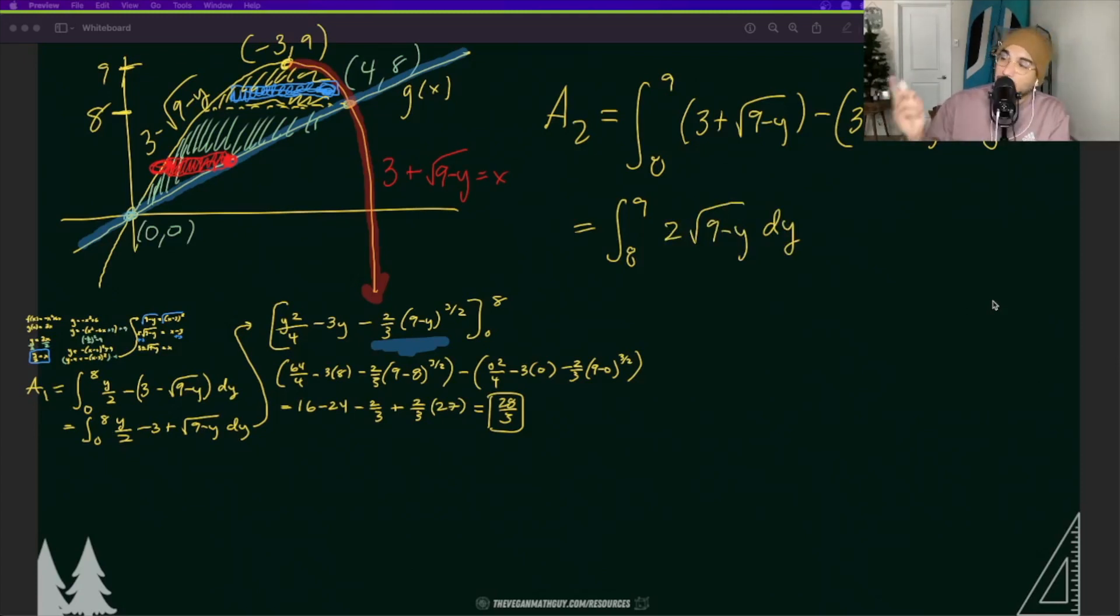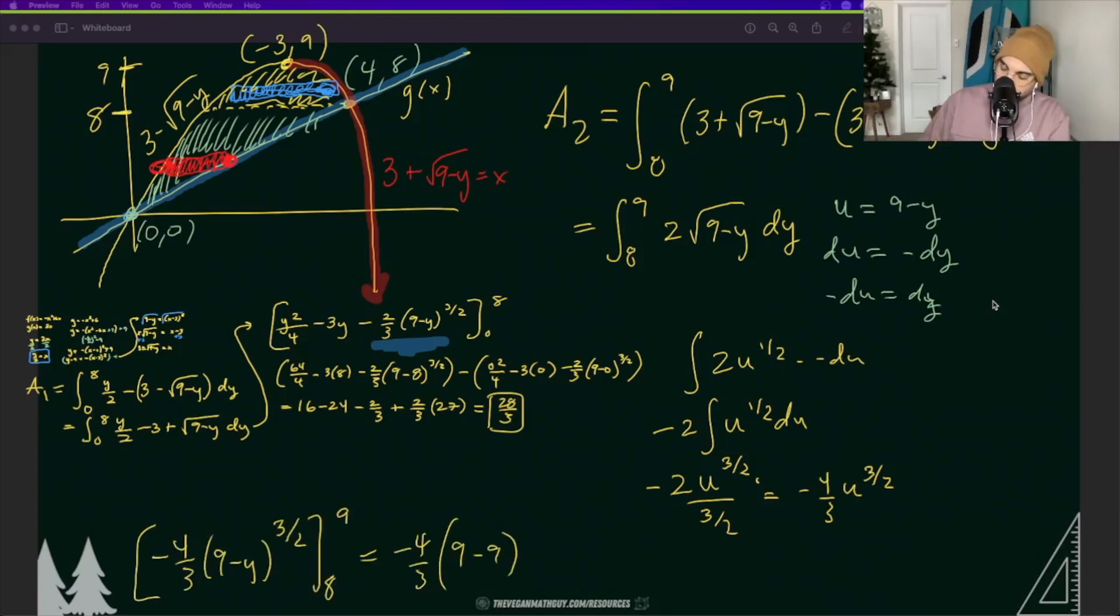If you're confused on how I integrated this the first time let me go ahead and show you. I did u = 9 - y. du = -dy. So -du = dy. And so now I have 2u^(1/2) times -du, -2u^(1/2) du. And I can use power rule. This is -4/3 u^(3/2). And now let me go ahead and plug in the 9 - y back into my u and use my parameters to find the area. It looks like this area is just 4/3.